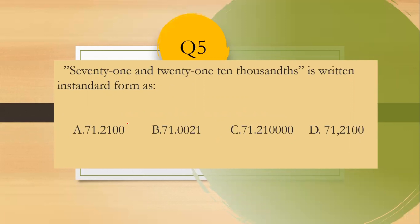Question number five: 71 and 21 ten-thousandths — write in standard form. After the decimal point, the place values are: tenths, hundredths, thousandths, ten-thousandths. Since we have 21 ten-thousandths, we place 21 in the ten-thousandths place. The answer is letter B.